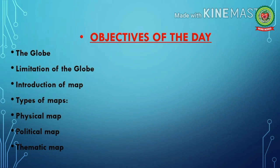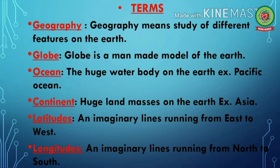Today we will discuss only the globe, limitation of the globe, introduction of map, and types of maps — physical map, political map and thematic map. But before we proceed, let me discuss important terms related to it. Number one: geography means study of different features on the earth. Number two: globe means a man-made model of the earth.